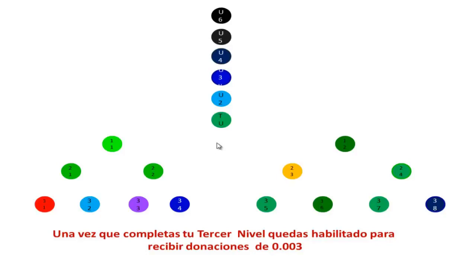De esa manera usted queda habilitado para empezar a recibir donaciones del siguiente nivel, que sería el nivel 3. Una vez que completas tu tercer nivel, quedas habilitado para recibir donaciones de 0.003. O sea, una vez que usted hace una donación, usted está habilitado para recibir también la misma cantidad de donaciones.